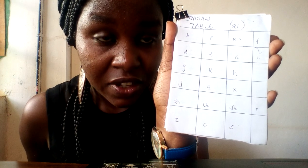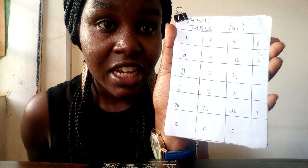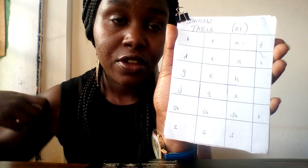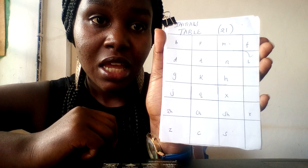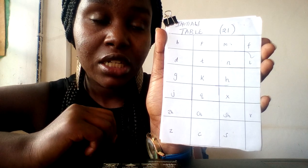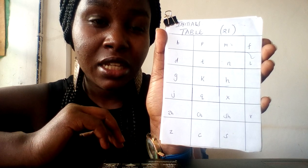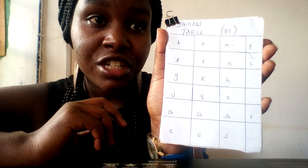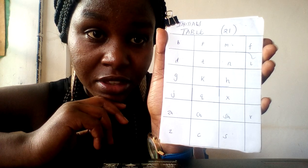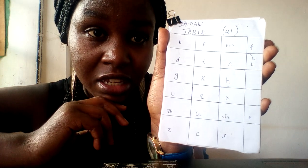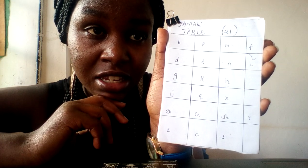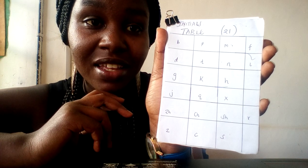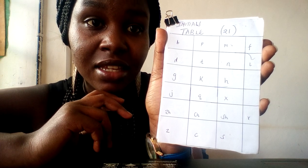Then we have zh, ch, and sh — these are complex, but we will deal with them still: zh, ch, sh. And then we have z, c, and s.